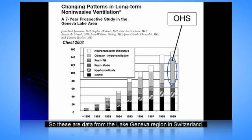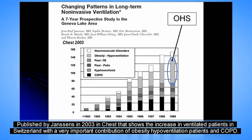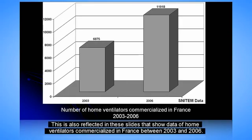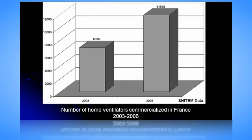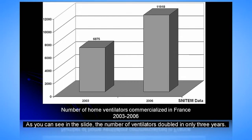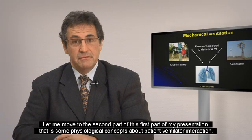These are data from the Geneva Lake region in Switzerland, published by Janssen in 2003 in CHEST, showing also the increase of ventilated patients in Switzerland, with a very important contribution of obesity hypoventilation patients and COPD. This is also reflected in slides showing data of home ventilators commercialized in France between 2003 and 2006 — the number of ventilators doubled in only three years.